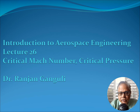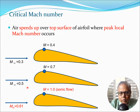Today we start lecture 26 and I'm going to discuss critical Mach number and critical pressure. If you place an airfoil in a flow where the free stream Mach number is something like 0.3, there is going to be a certain point in the flow, typically on the upper surface, where the Mach number is higher than the free stream value. This happens because the air speeds up on the top surface, so the peak Mach number occurs near the leading edge.